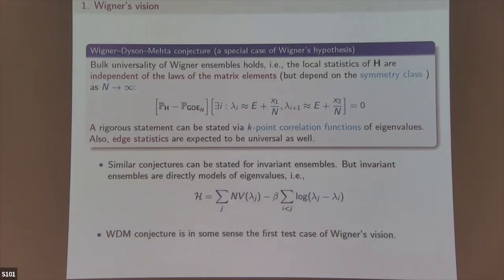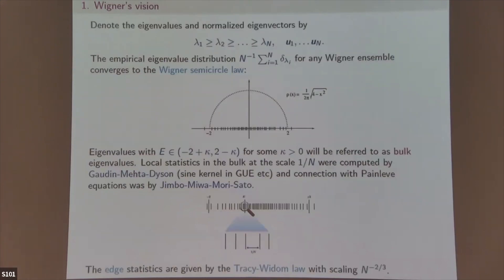There are explicit formulas — I won't list them here because they're not directly related to this talk. There is Jimbo-Sato work. [Question from audience: does it occur at the edges?] It's in the bulk — in the wall, in the bottom. There is also work at the edge.